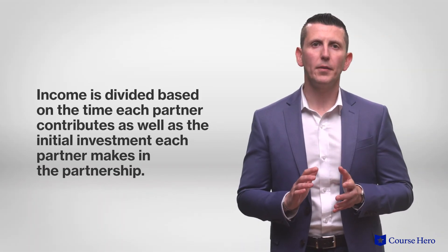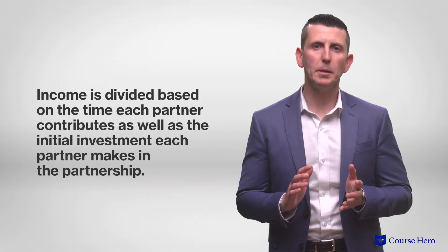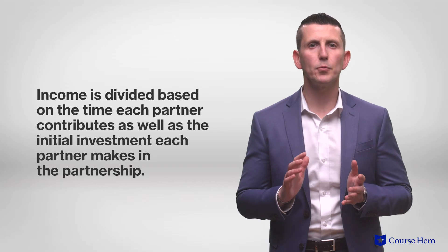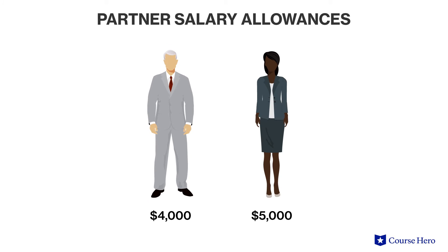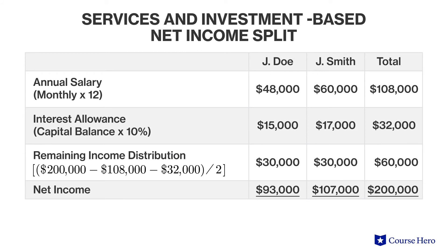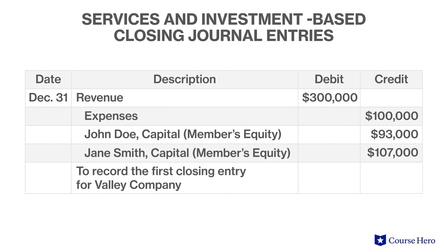Another way that partners may divide income is based on how much time the partner contributes to the partnership as well as the amount of the initial investment. For example, John's monthly salary allowance is $4,000 and Jane's is $5,000. However, there is an additional deposit of 10% of the capital balance to each partner's capital account as of December 1st. The remaining income is then shared equally among the partners, and a closing entry for revenue, expenses, and division of net income must also be recorded.